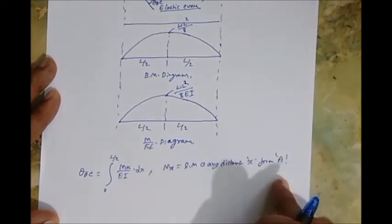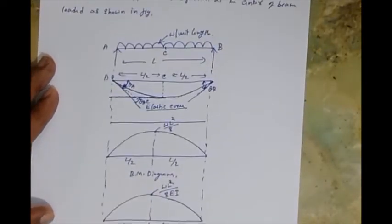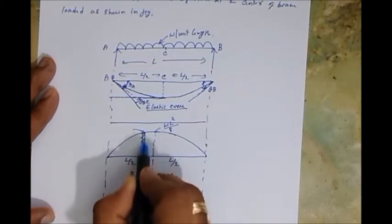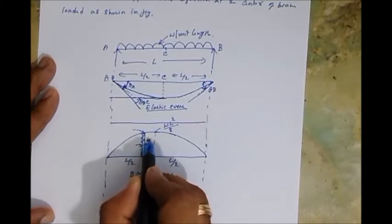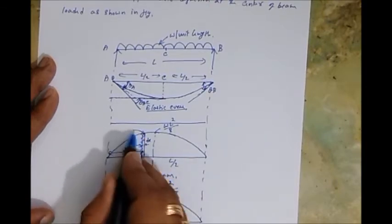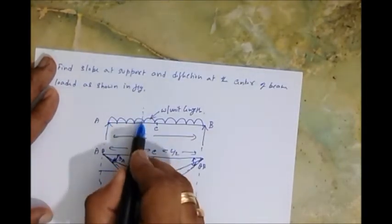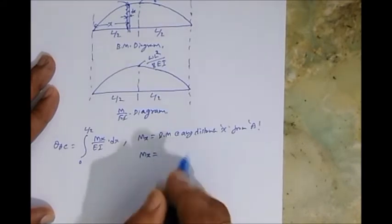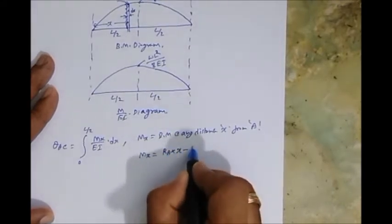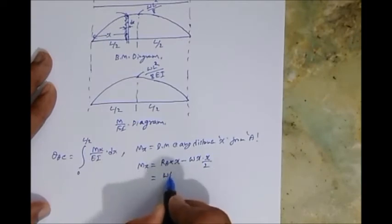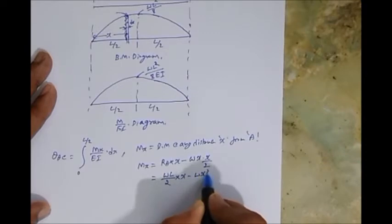The bending moment at any distance x from A for a simply supported beam is: Mx = RA·x − Wx²/2. Since RA = WL/2, this gives Mx = WL/2·x − Wx²/2. Let's substitute this into the integral. Also, theta AC = theta A − theta C, and since theta C = 0, we directly get theta A = integral from 0 to L/2 of [(WL/2·x − Wx²/2) / EI] dx.